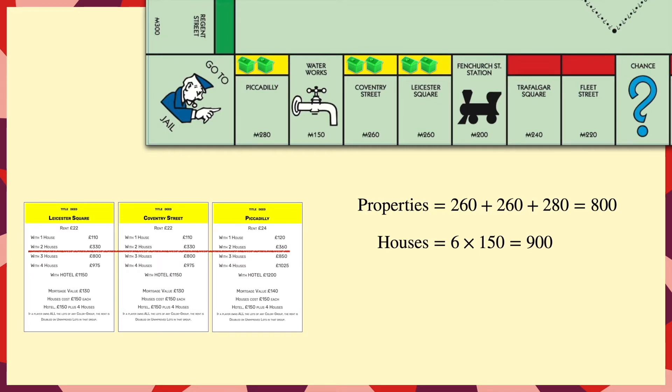Now if we assume that in the long run a player has a 1 in 40 chance of landing on any given square, then our expected rent each time a player rolls the dice is simply the sum of the rents divided by 40. From this we can calculate the expected number of rolls for us to break even on our investment, which in this case is about 67.